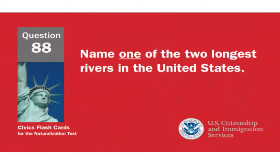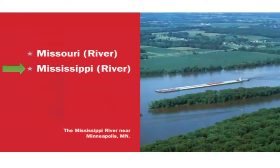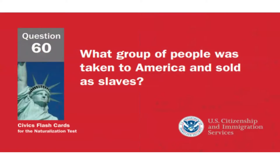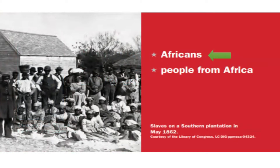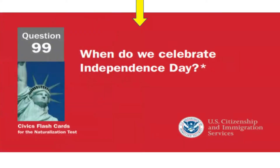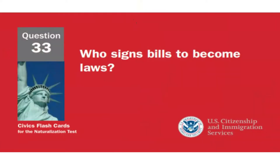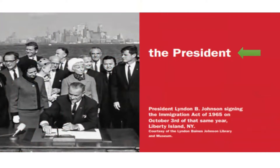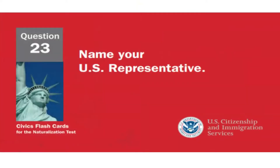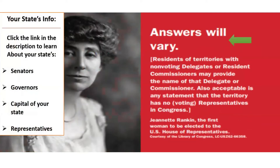What is one reason colonists came to America? Freedom. Name one of the two longest rivers in the United States. The Mississippi River. What group of people was taken to America and sold as slaves? Africans. When do we celebrate Independence Day? July 4th. Who signs bills to become laws? The president.